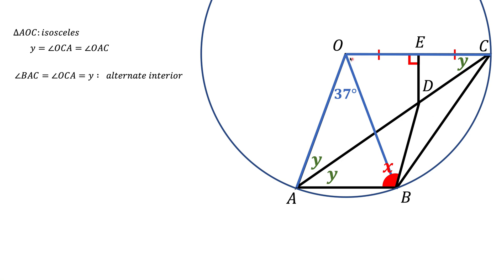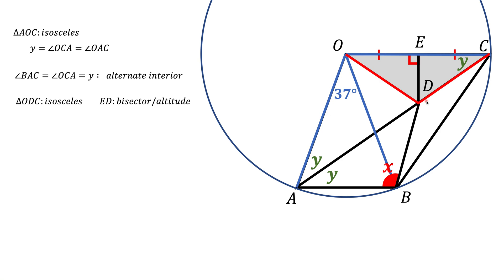Next, we're going to connect point O and D. In this case, triangle ODC — the gray triangle — is an isosceles triangle. That's because ED is both the bisector and the altitude of side OC at the same time. This means OD equals CD. Angles at the base should be the same, so the angle at O equals the angle at C, which is Y.